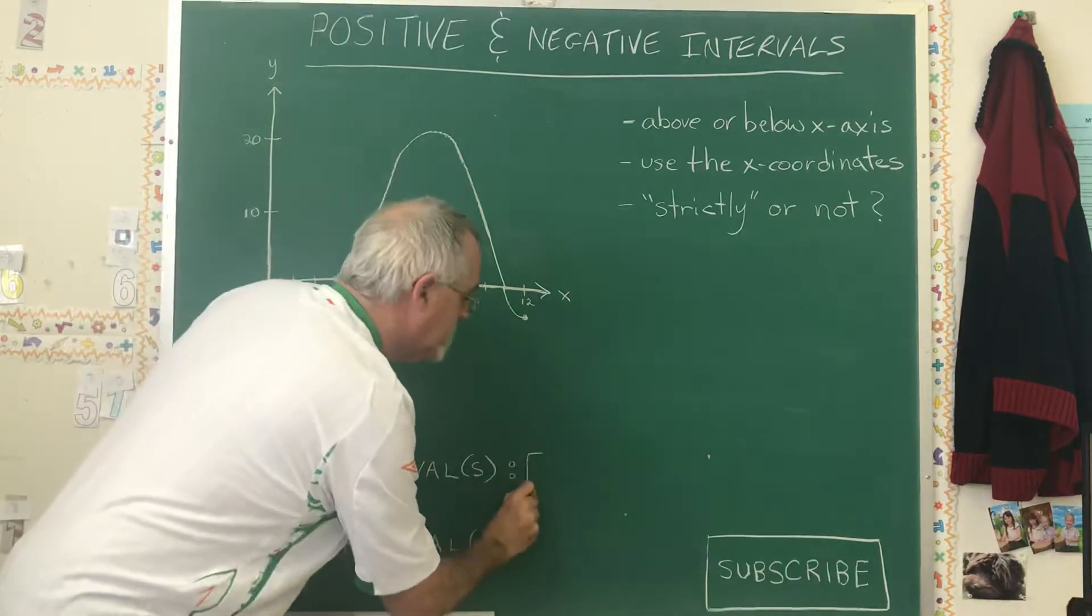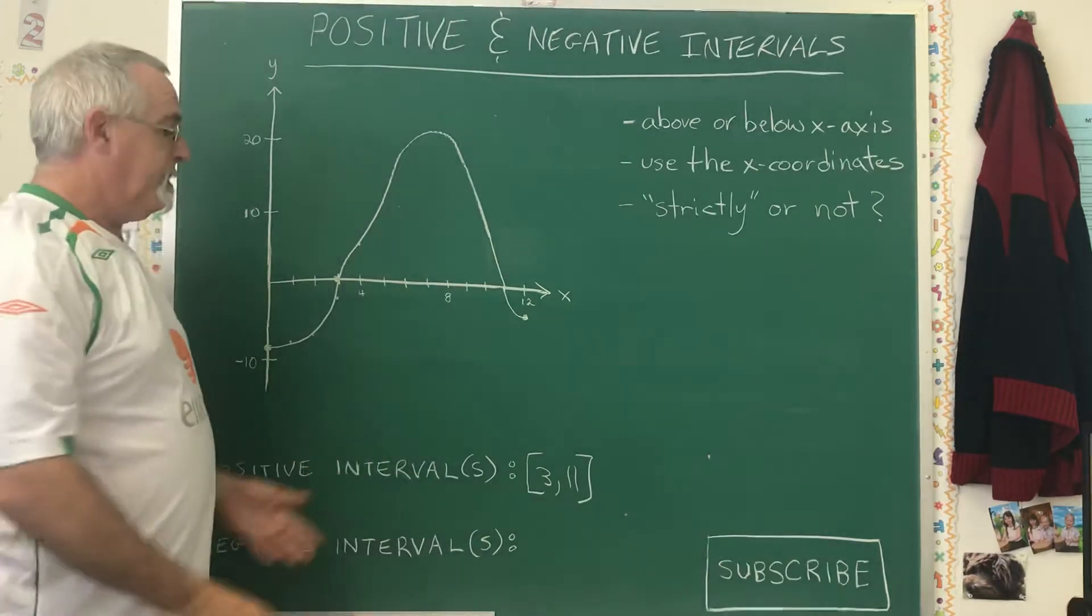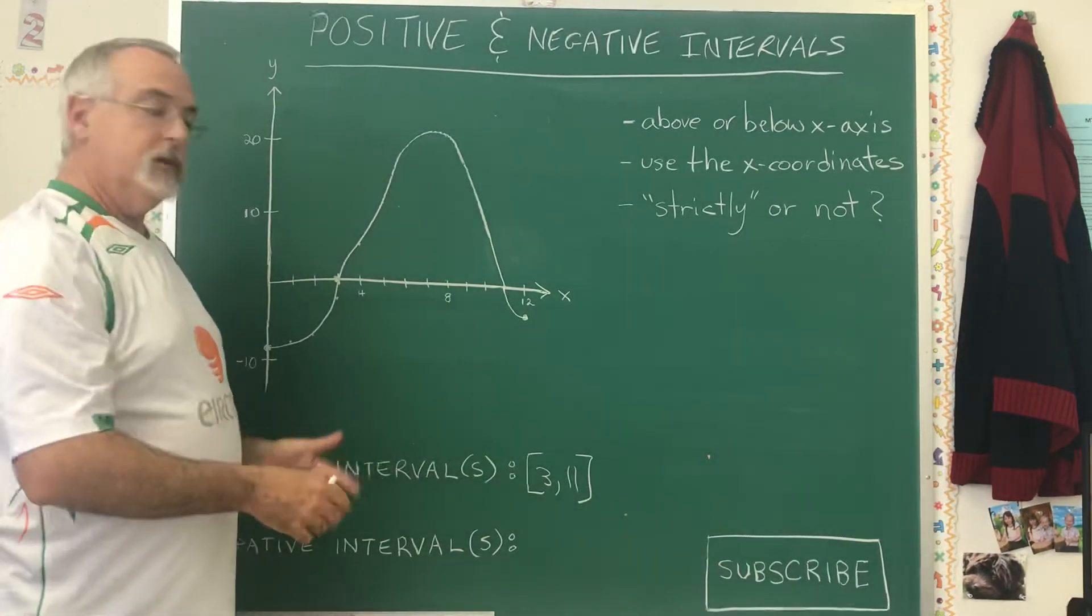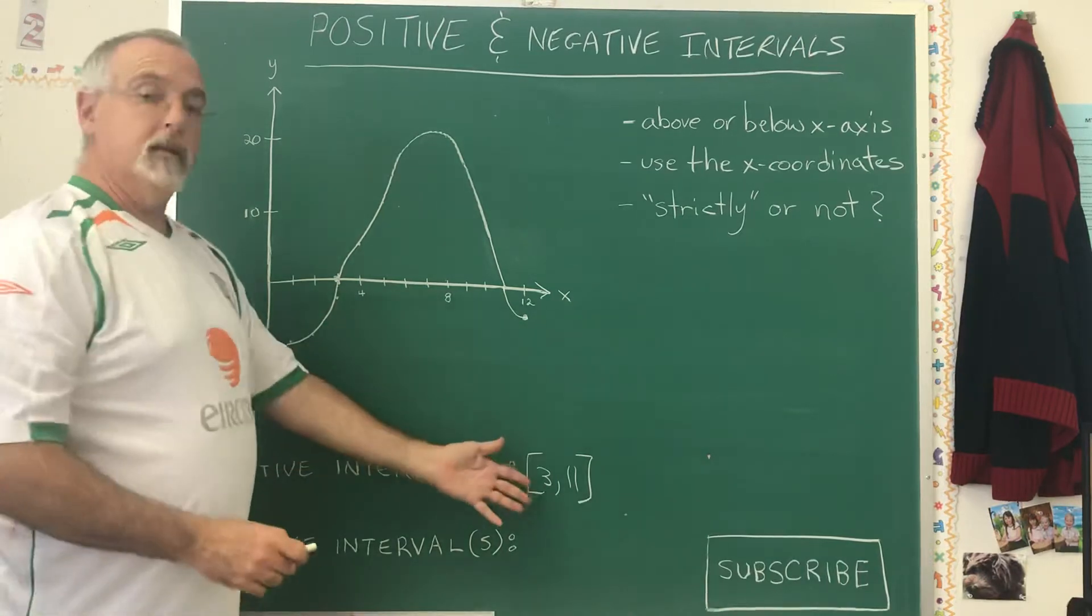So the positive interval is 3 comma 11 with square brackets, and the brackets are pointed inwards so that the numbers are included. We're using the x-coordinates for this.